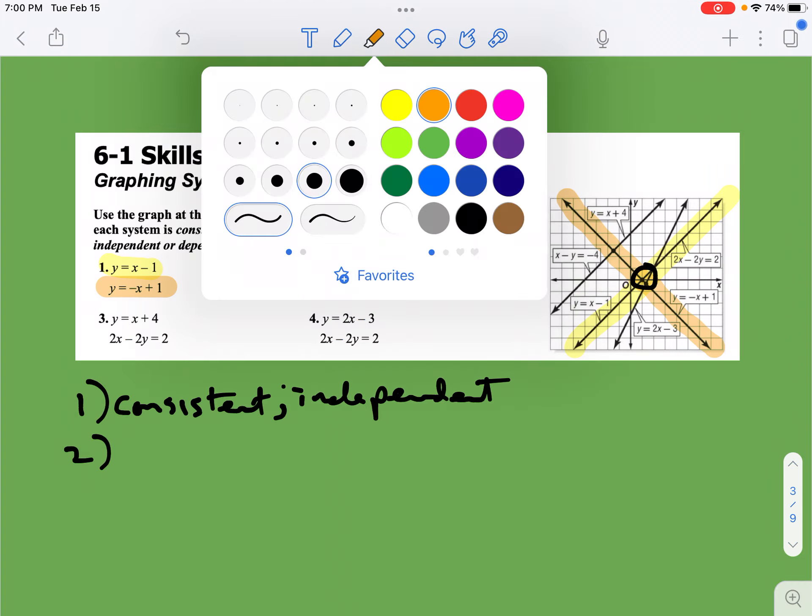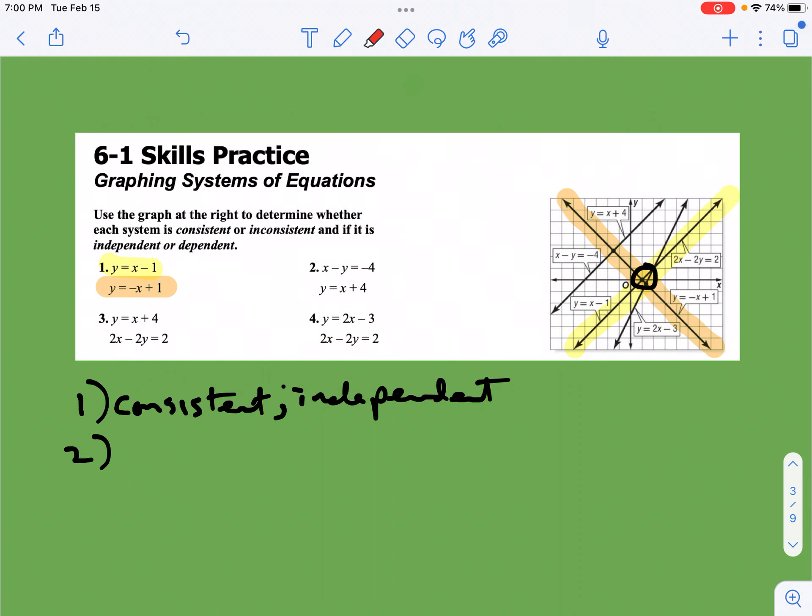So number two, we have x minus y equals negative 4. That's this guy right here, and then we have y equals x plus 4. You'll see that that's the same line. If you do a little messing around with these equations—move things around on the second equation and put it into standard form—you'll actually see that you get the exact same equation, and that's usually the case for these. There is a solution because they lie on top of each other. There's just an infinite number of them. So we call that consistent and dependent. That is our infinite number of solutions.